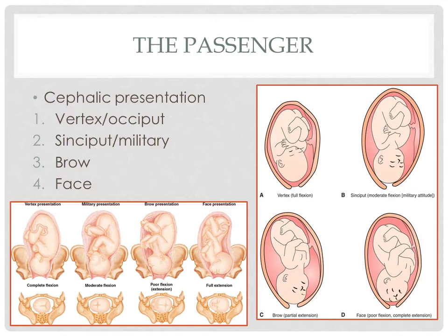In a vertex presentation, the occiput is presenting. In a sincyput presentation, the anterior fontanel or bregma is presenting. In a brow presentation, the fetal brow is presenting. And lastly, in a face presentation, the fetal face is presenting.